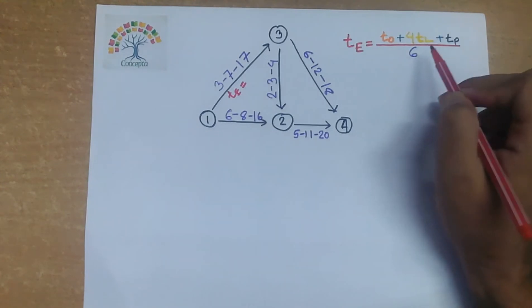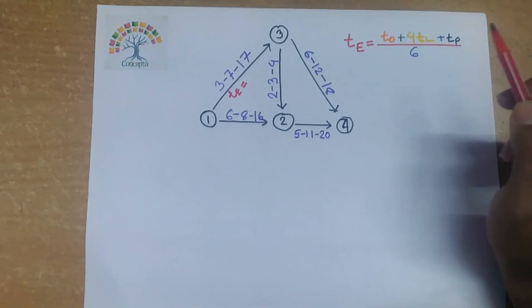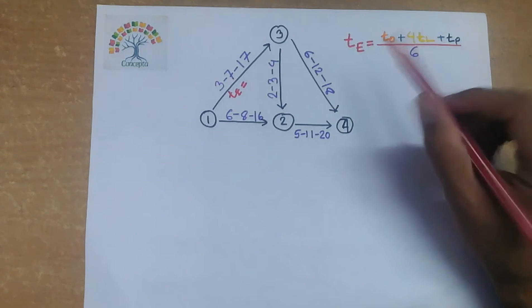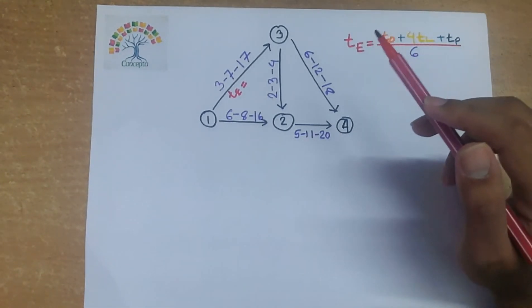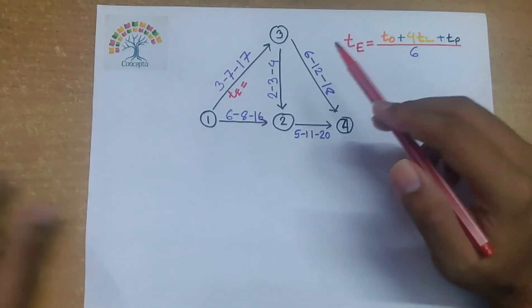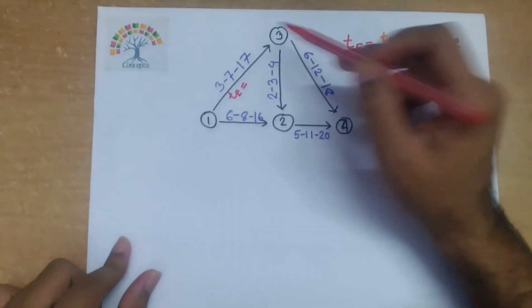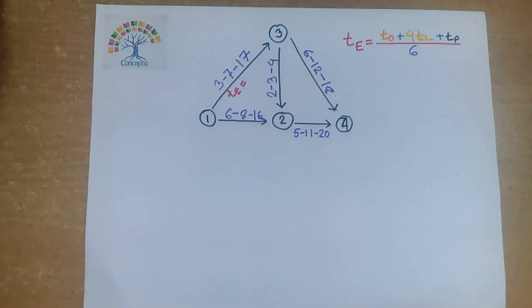te equals to t0 plus 4tl plus tp by 6 is a part of repetitive calculation of any PERT network diagram, so hand calculation will be time consuming. So for huge PERT network diagram, we can solve it by calculator within a short period of time. So let's apply the trick for this individual PERT network diagram.